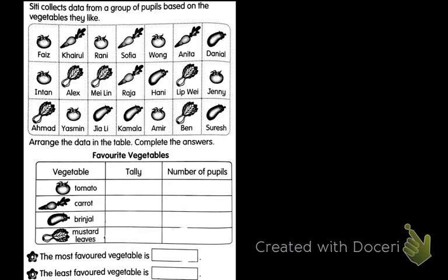Next. A city collects data from a group of people based on the vegetables they like. Arrange the data in the table and complete the answers. Favorite vegetables. Now here we are going to use tally. What is tally?